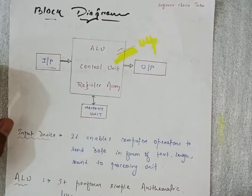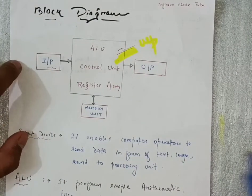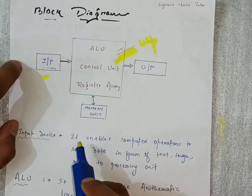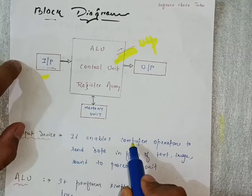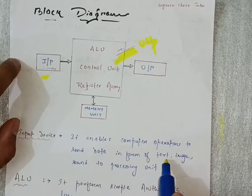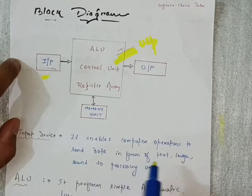Coming to the different parts involved in the microprocessor. The first one is input. Its definition will be: it enables computer operator to send data in forms of text, images, sound to the processing unit.